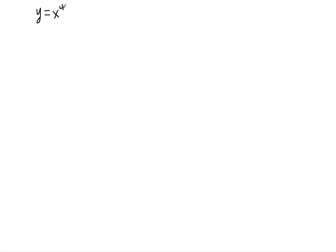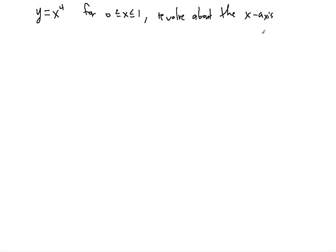The example we'll use here is the function y equals x to the fourth, and we're going to revolve this for 0 less than or equal to x less than or equal to 1, revolving about the x-axis.